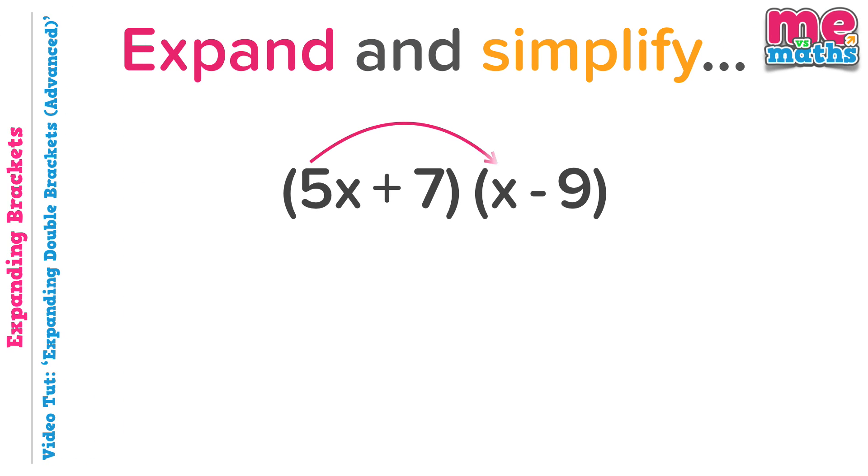Okay, our first branch shows we need to multiply 5x by just x. If it helps then think of this as 5x times 1x. 5 times 1 is 5, and x times x is x squared, so 5x squared. Next, 5x times minus 9. That's a positive times a negative, so we'll get a negative answer. 5 times 9 is 45, so altogether minus 45x.